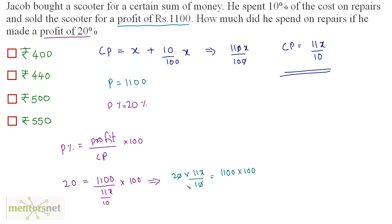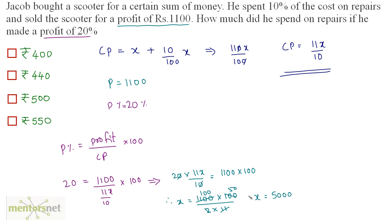The zeros cancel out, so X equals 1100 times 100 divided by 2 times 11. Since 11 times 100 is 1100 and 2 times 50 is 100, X equals 5000 rupees. So the price at which Jacob bought the scooter is 5000 rupees.